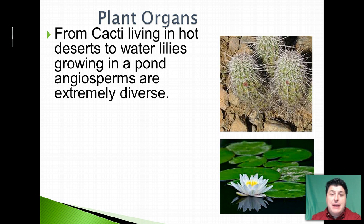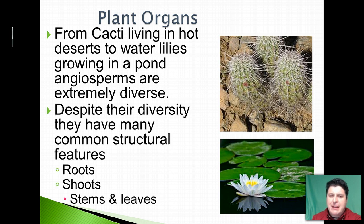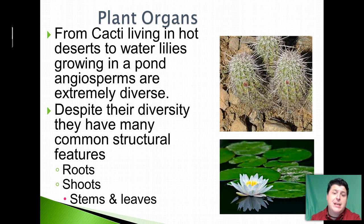From cacti, which live in hot deserts, to water lilies that grow in a pond, angiosperms are extremely diverse. Despite their diversity, they have many common structural features including roots and shoots, which include our stems and leaves.